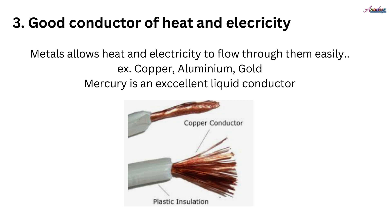The third property of metal is that it is a good conductor of heat and electricity. Generally, metals allow heat and electricity to pass through them easily. For example, copper, aluminum, and gold. Mercury is also an excellent liquid conductor — it is the only metal found in liquid state. You can relate this to the fact that electric wires are made up of copper and aluminum, because both are good conductors of electricity.